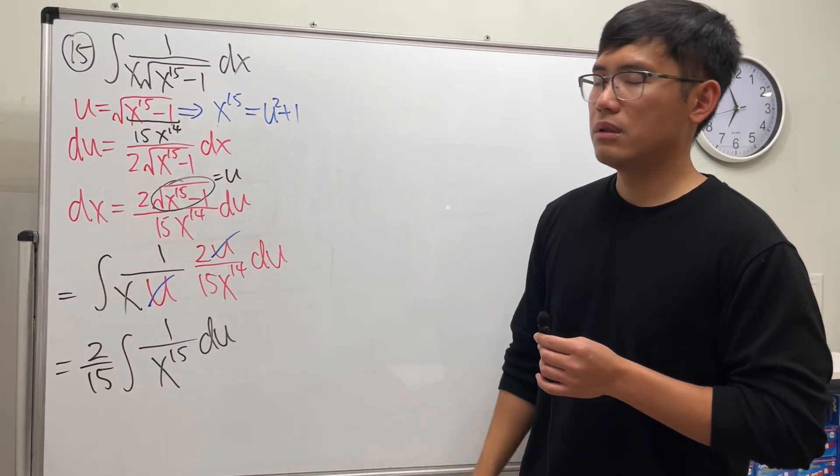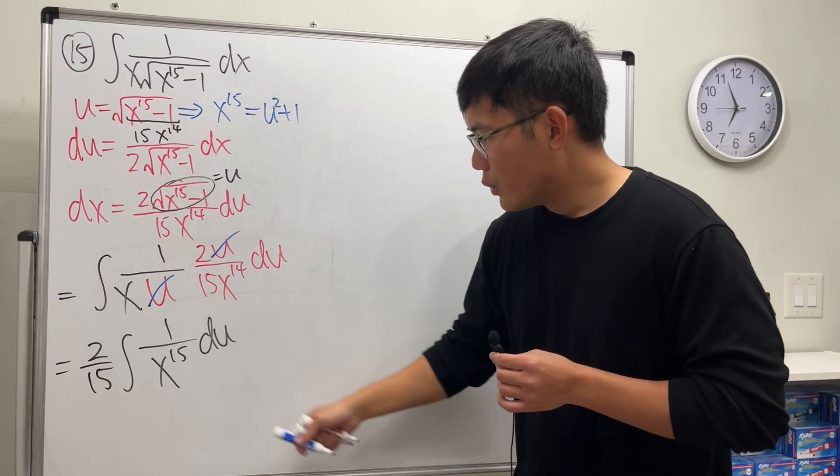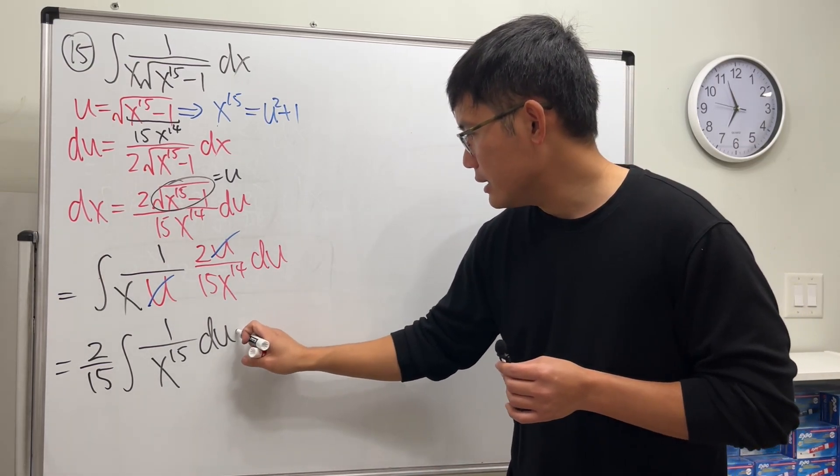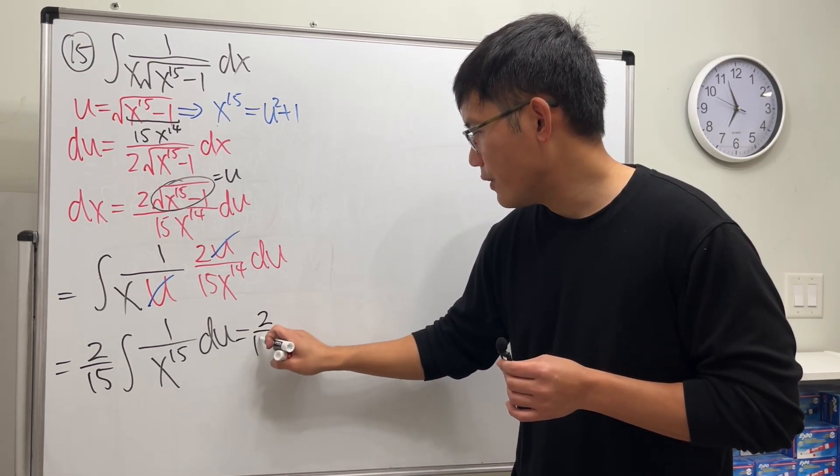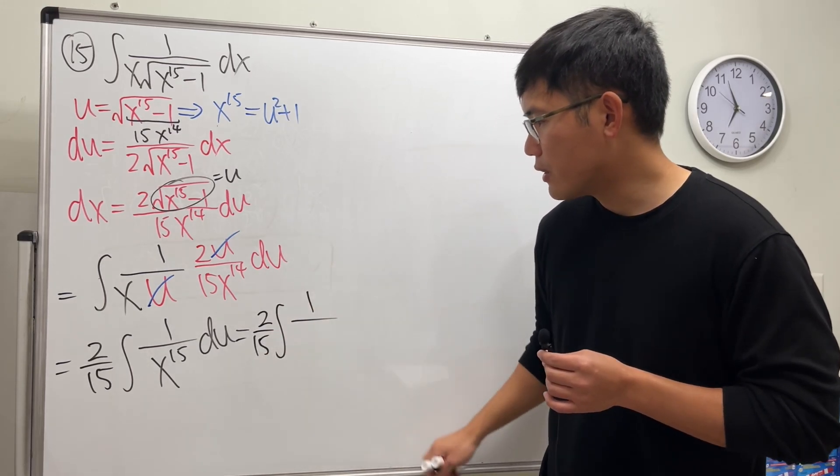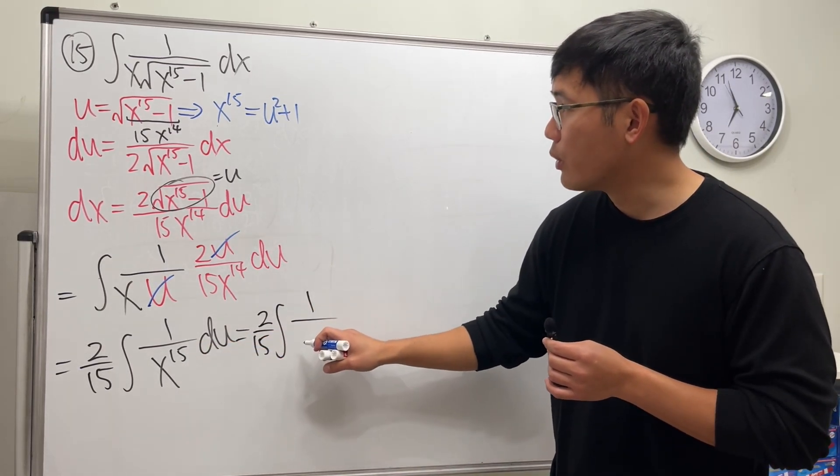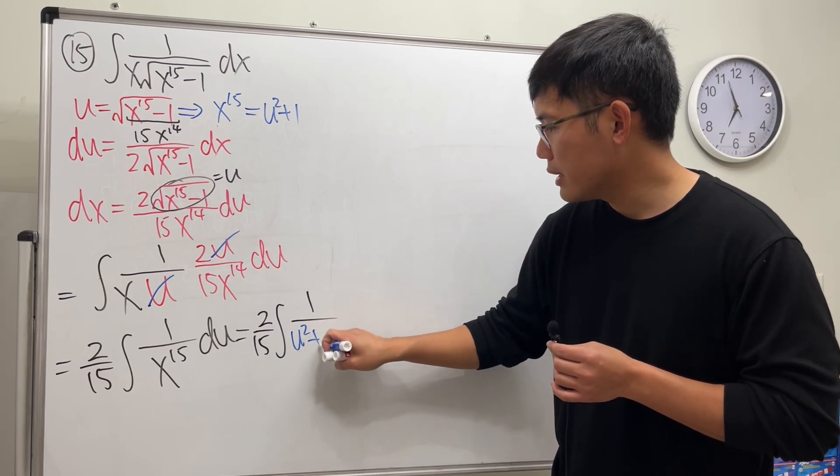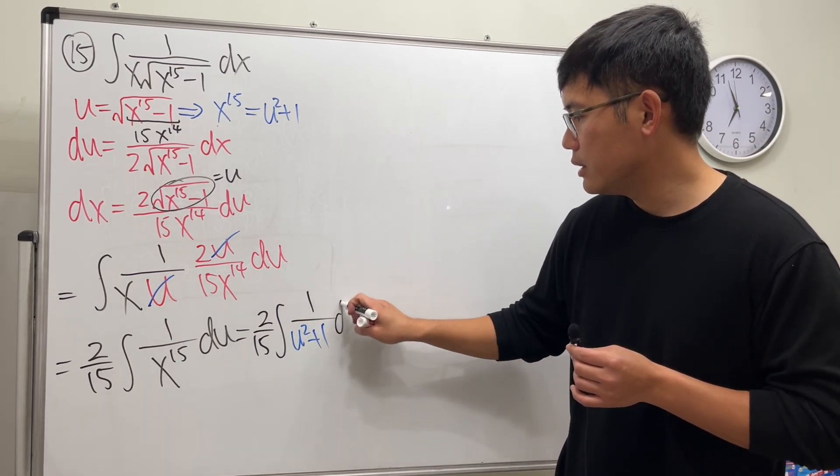So we will have to write this as 2 over 15 integral 1 over x to the... x to the 15th power. We have the 15th power. We have the u square plus 1 du.